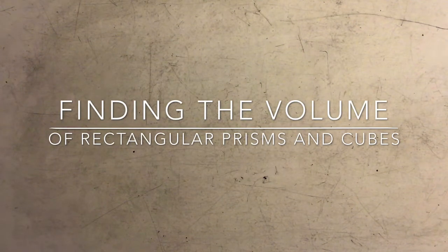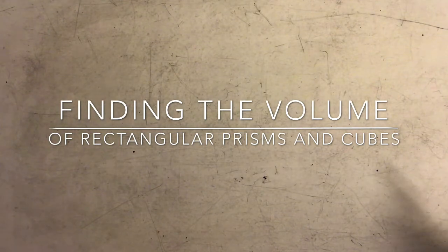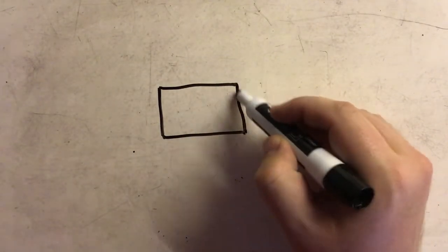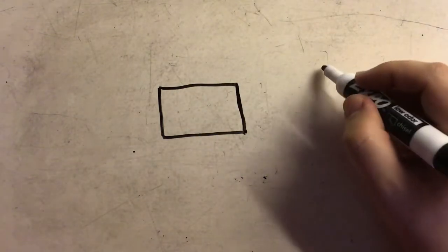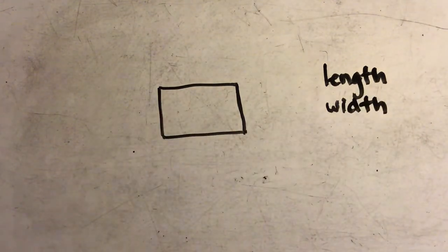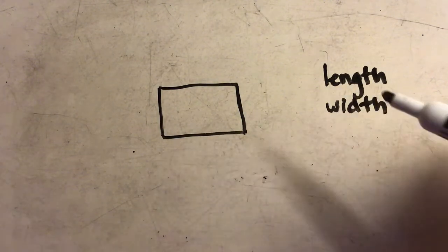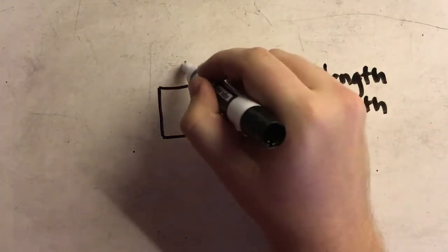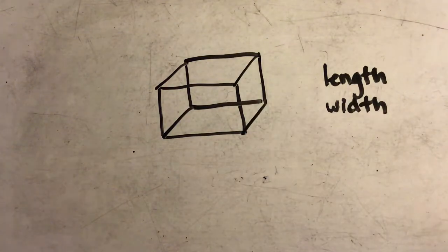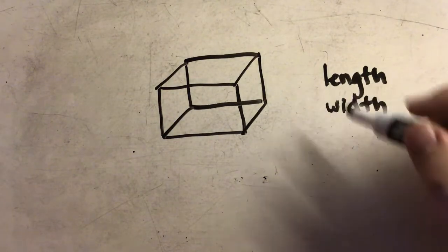Today we're going to learn how to find the volume of rectangular prisms and cubes. When I say volume, I'm not talking about the volume of your television or radio — I'm talking about the amount of space that is inside of a three-dimensional object. It's related to area. To find the area of a square, I need to know the length and the width, and area describes a flat, two-dimensional figure. Volume, on the other hand, deals with a three-dimensional figure — something that has depth, something you could put objects inside.